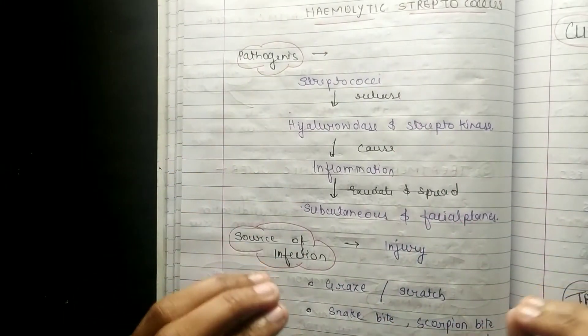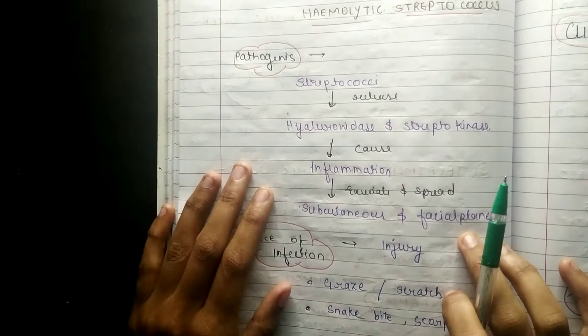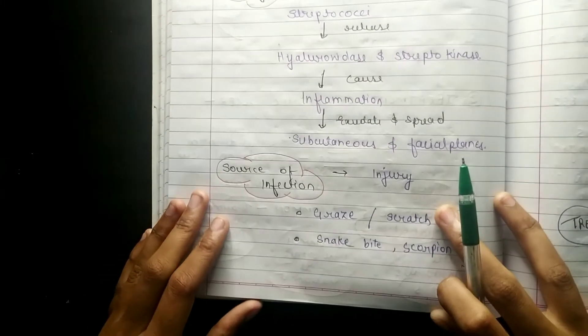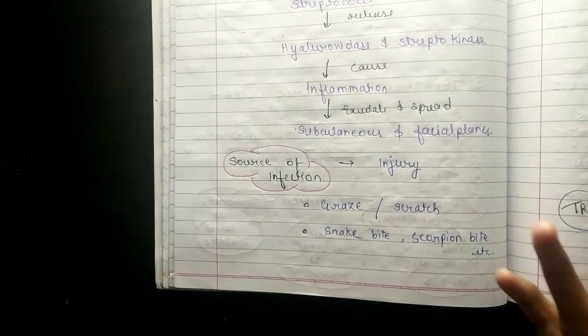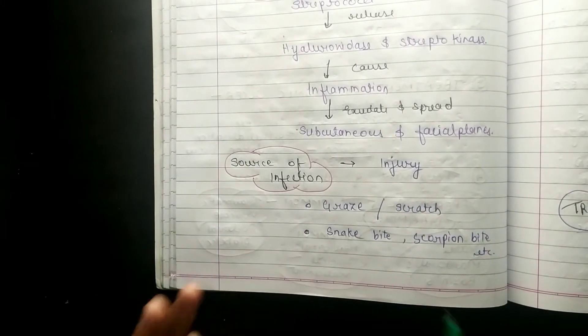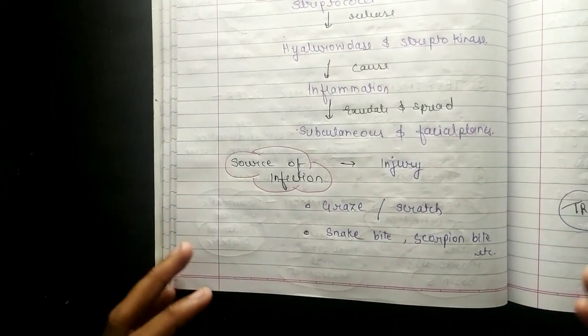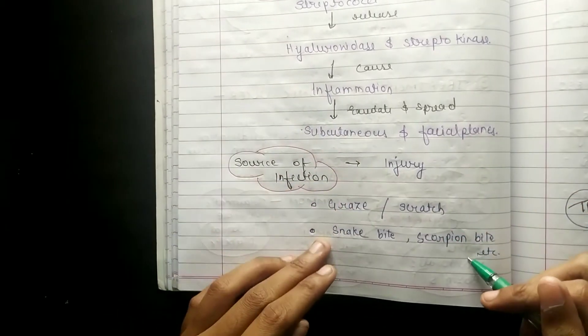Coming to the source of infection, it can be due to injury, any scratch or grass, snake bite, scorpion bite, etc.